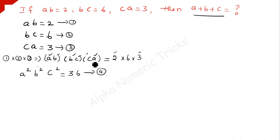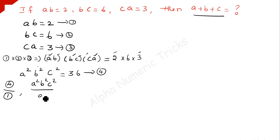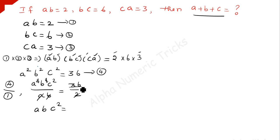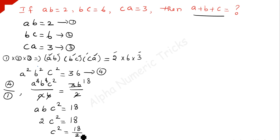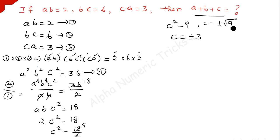Next, we divide equation 4 by equation 1. Equation 4 is A squared B squared C squared, and we divide the left-hand side by AB, and the right-hand side 36 by 2. The AB terms cancel, leaving BC squared equal to 18. But from equation 1, AB is equal to 2, so 2 times C squared equals 18, giving C squared equal to 9. Therefore C is equal to plus or minus 3.